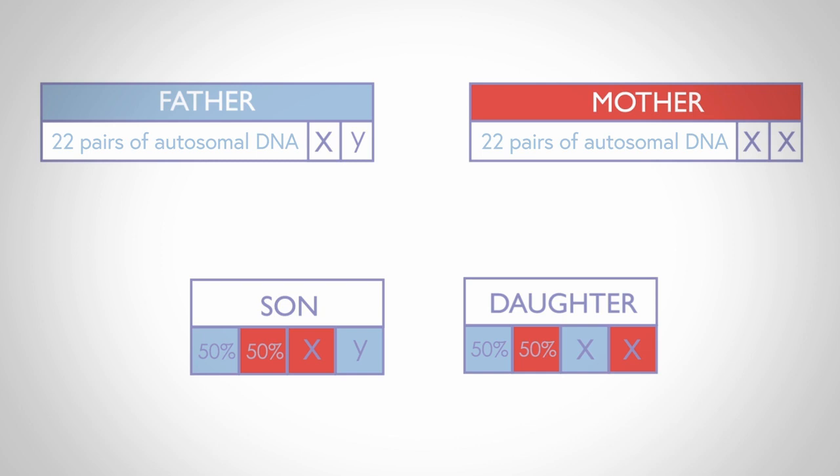Almost all of the Y chromosome is passed from father to son, but the X chromosome, which is passed on by the mother, is a recombination of the X DNA which she has inherited from her two parents.